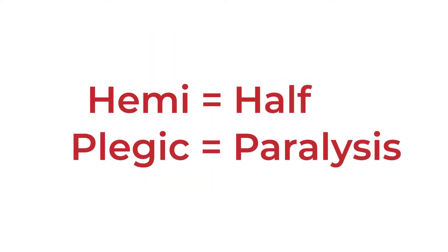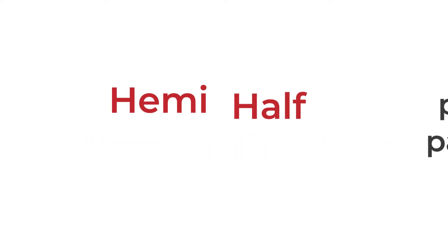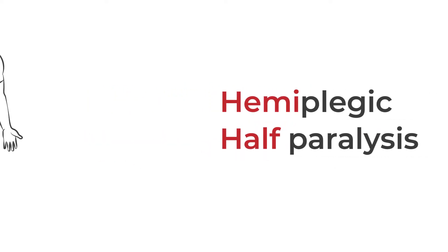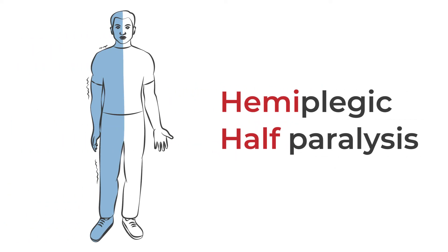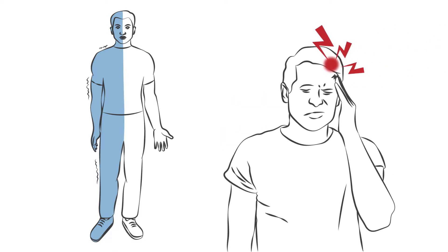Hemi means half and plegic means paralysis. The distinguishing symptom of hemiplegic migraine is one-sided weakness or paralysis. Attacks may be accompanied by a headache or one can follow shortly after.